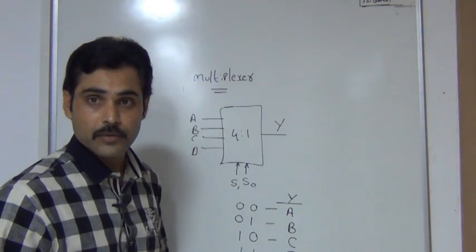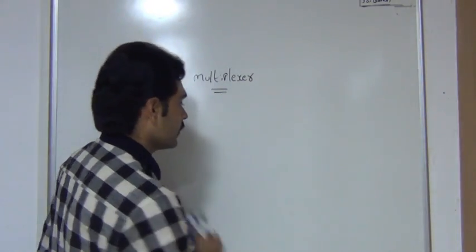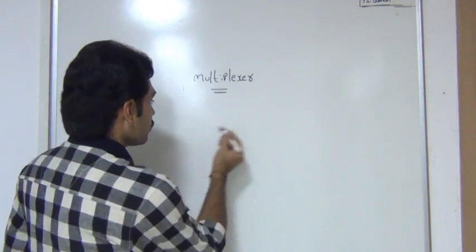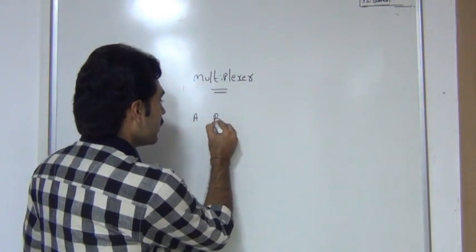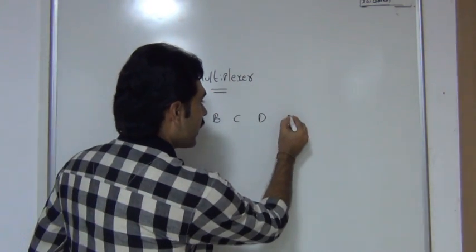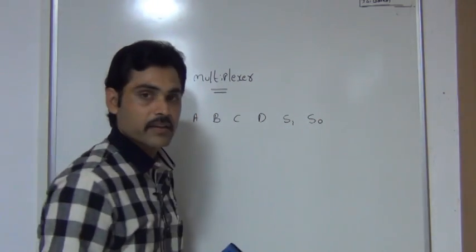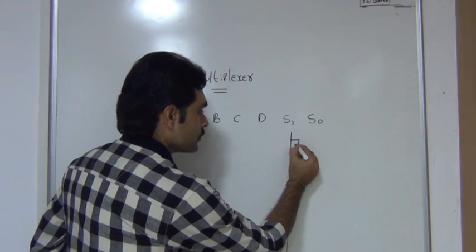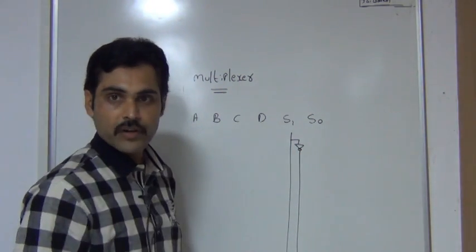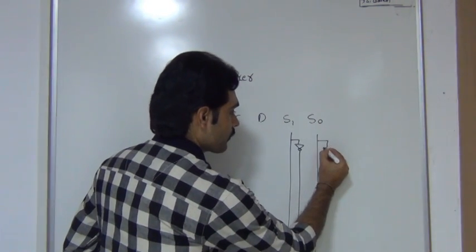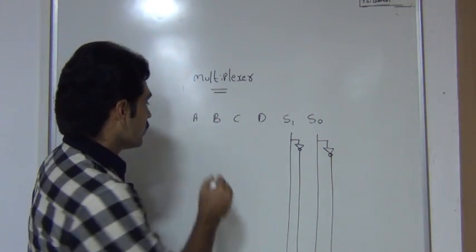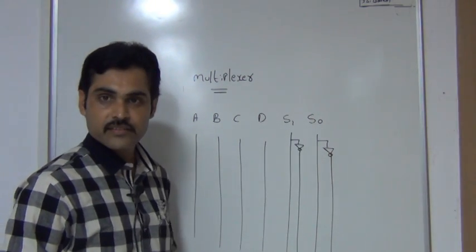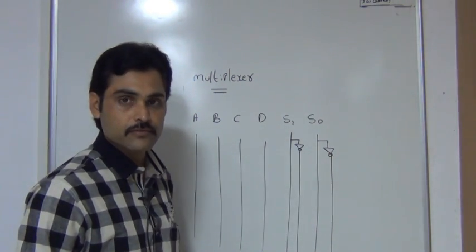Now I will show the logic diagram of the 4-to-1 multiplexer — converting the operation I discussed into a logic diagram. For that, I require 4 inputs: A, b, c, d, and 2 selection lines: s1 and s0. Every time the selection line values are changing, so I will take NOT gates also because they will produce the complement value of the selection line. I have taken 4 inputs and 2 selection lines, with NOT gates taken to generate different combinations.